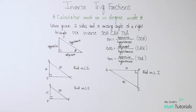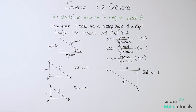So in my previous video, we talked about SOHCAHTOA — sine, cosine, and tangent — and how we can use SOHCAHTOA if we've been given an angle and one side and they want to know another side. That's when we're going to use SOHCAHTOA, and of course it's got to be a right triangle.